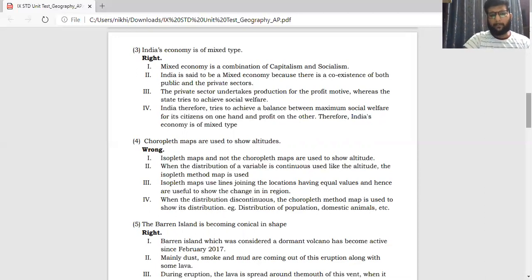Alright, let's come to the fourth question. The choropleth maps are used to show altitudes. The answer is wrong. Isopleth maps and not the choropleth maps are being utilized to show altitude. That is elevation, height. When the distribution of a variable is continuous, like altitude for example, the isopleth map is utilized for that. The isopleth maps use the lines joining the locations having equal values and hence are useful to show the change in a region. When the distribution is discontinuous, that is it is broken, the choropleth map method is utilized to show distribution. For example, we can show distribution of population, domestic animals.